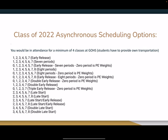Class of 2022 asynchronous scheduling options — again, you would be in attendance for a minimum of four classes at Great Oak High School, and you have to have your own transportation. As you can see, there are many scenarios for an upcoming senior. The first example is periods one through five, with no sixth period — you'd have early release — and then a seventh period asynchronous class, totaling at least five classes in your schedule if you wanted that option.